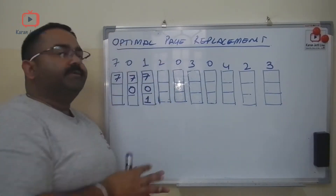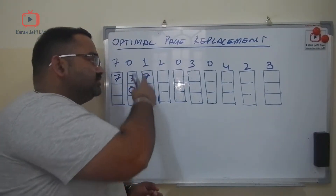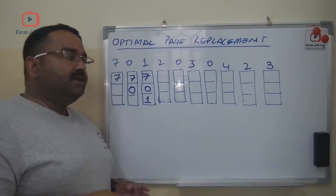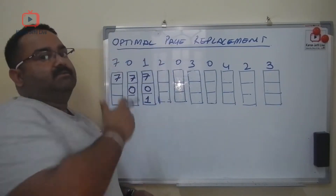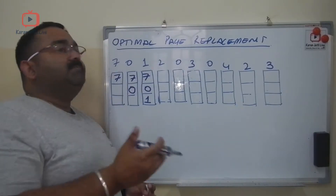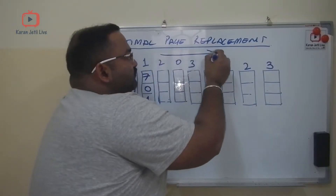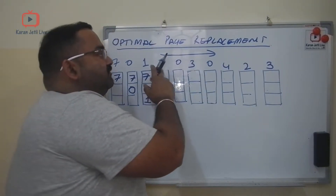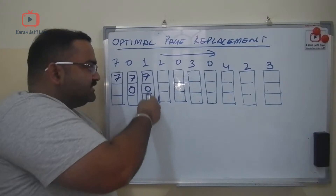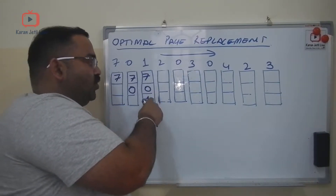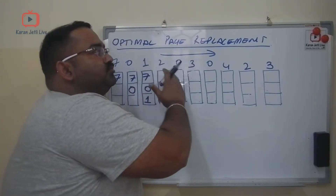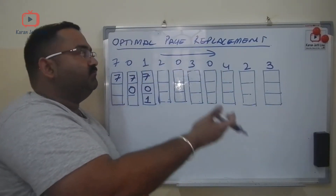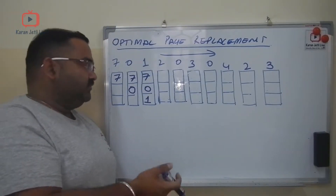Now comes 2, and my cache is already full. Which page should I replace? In LRU, we used to look back. In optimal page replacement, we have to look into the future. Take these three pages — 7, 0, 1 — and look for the page which you do not need for the longest time in the future.